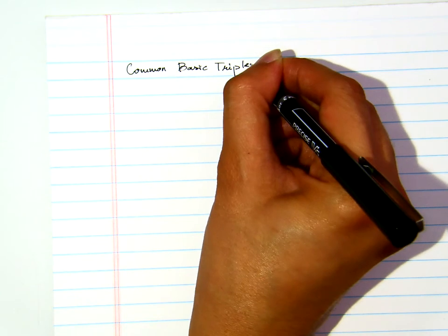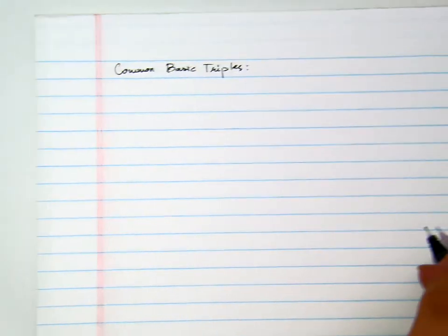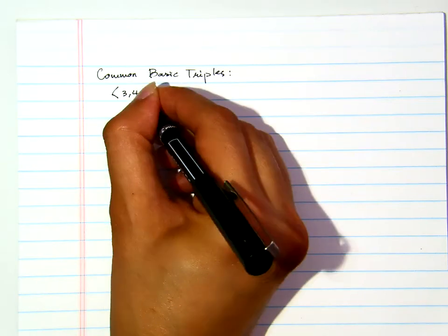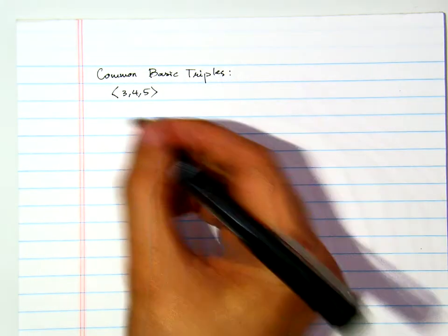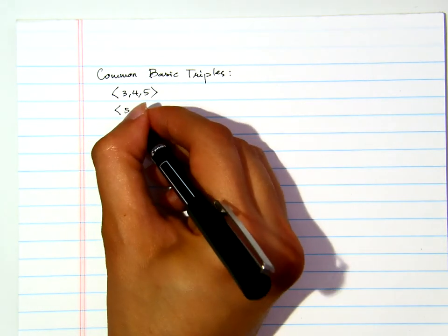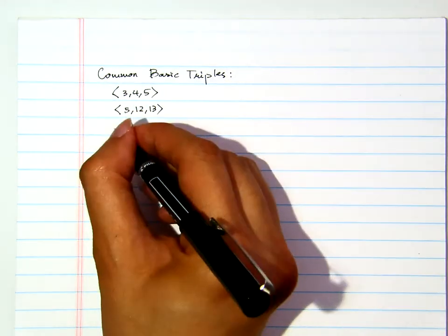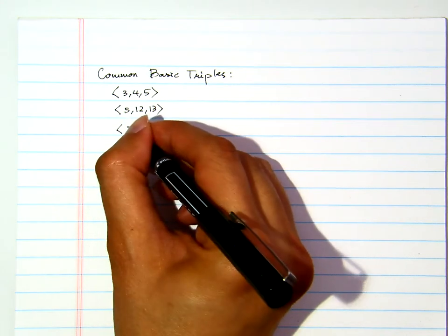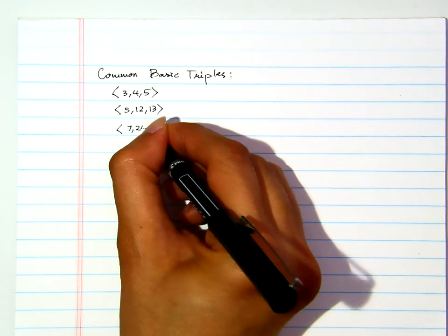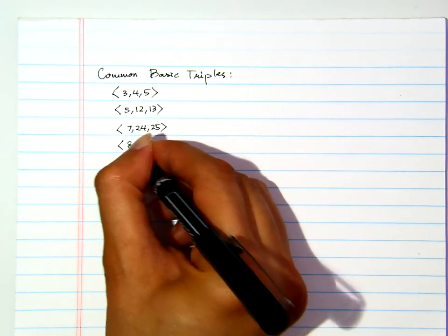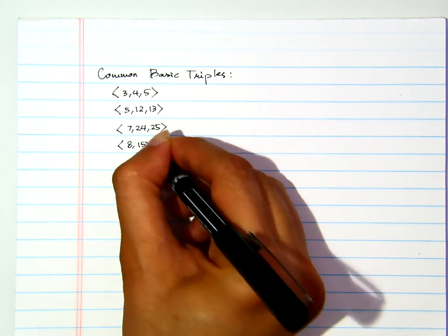So, I will give you four that show up very often. The first one is 3, 4, 5. We have seen that at least three times. The second one is 5, 12, 13. We have seen that at least twice. And then, the others, like 7, 24, 25. Eight, 15, 17.